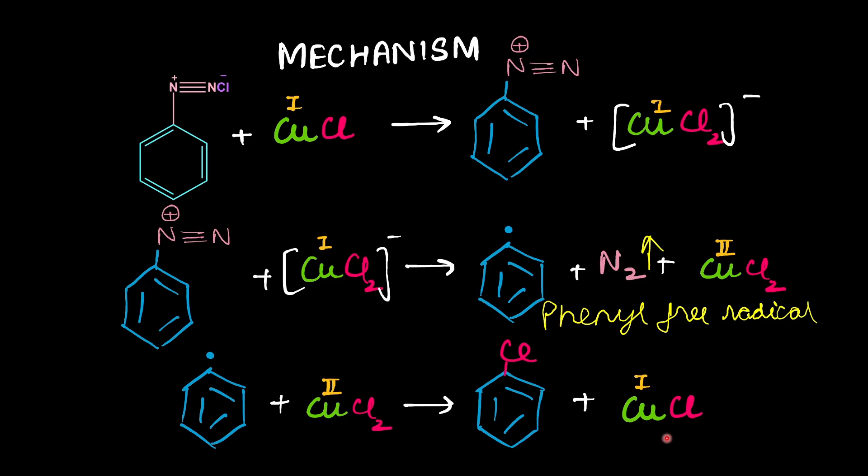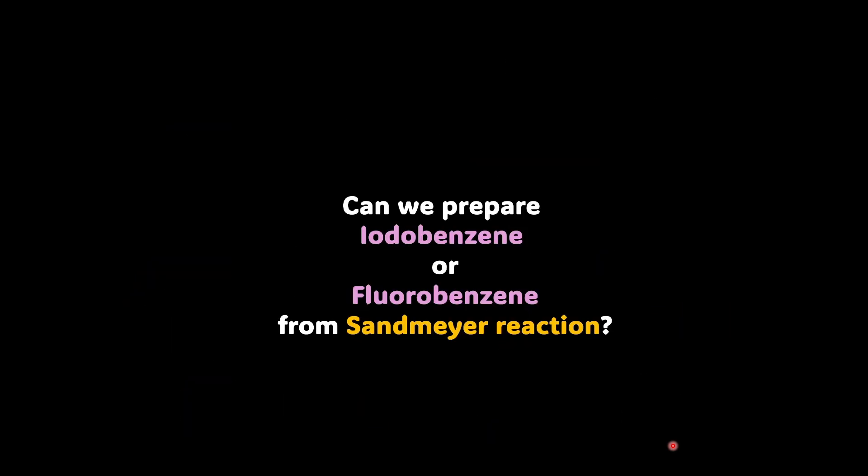So in nutshell, what is happening here is this cupric chloride in this reaction is acting like an oxidizing agent and itself is getting reduced from +2 oxidation state to +1 oxidation state, thereby regenerating cuprous chloride for the cycle to continue. Now, there is an interesting question waiting for you. My question is, can we prepare iodobenzene or fluorobenzene from Sandmeyer reaction? Answer lies in the mechanism itself.